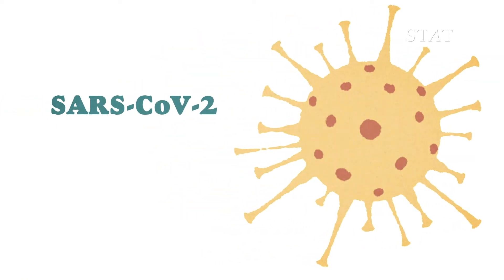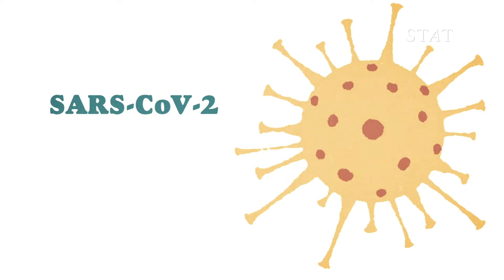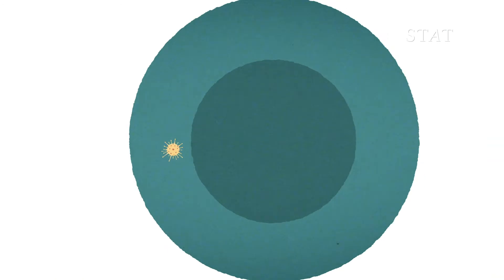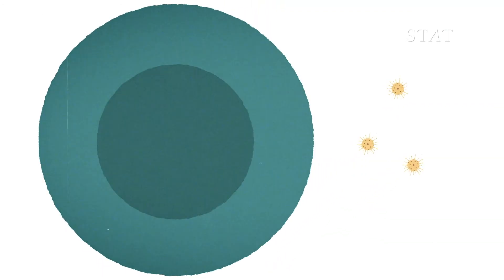It is not surprising that SARS-CoV-2 is mutating. All viruses mutate. Viruses reproduce by infecting cells and hijacking their machinery to make copies of themselves. But sometimes, this copying process makes mistakes.